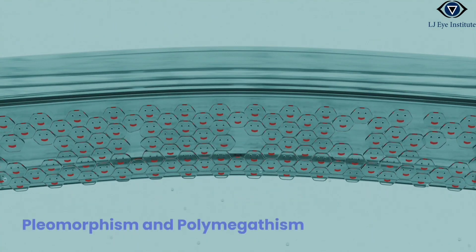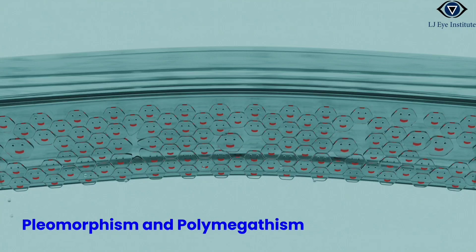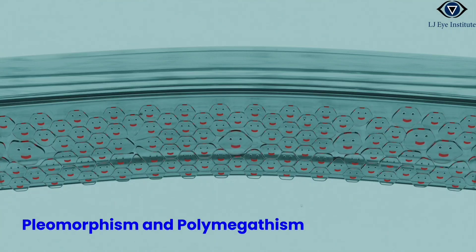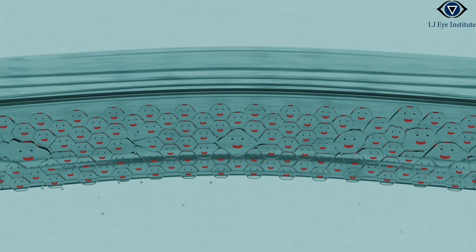They alter their size and shape to cover the areas left vacant by their lost counterparts, redistributing their efforts to maintain the cornea's essential functions—a phenomenon known as pleomorphism and polymegathism. This compensatory mechanism ensures that cornea remains clear.